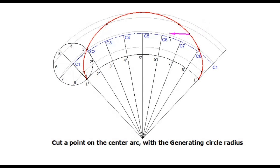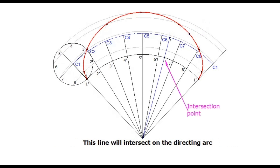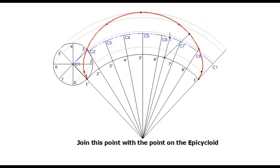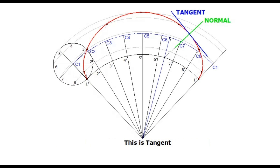To draw the normal and tangent, join a selected point on the epicycloid to the center of the directing arc. That line will intersect on the directing arc. Join that intersection point with the point on the epicycloid and extend this line — this is the normal. Draw a line perpendicular to the normal through the point on the epicycloid — this is the tangent.